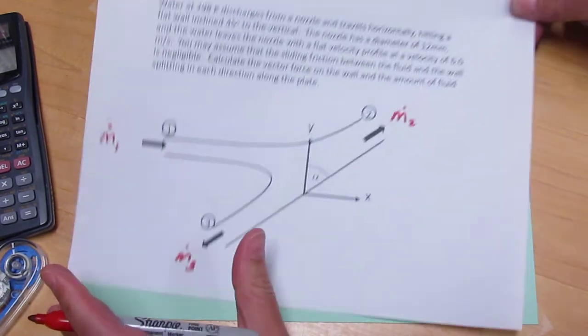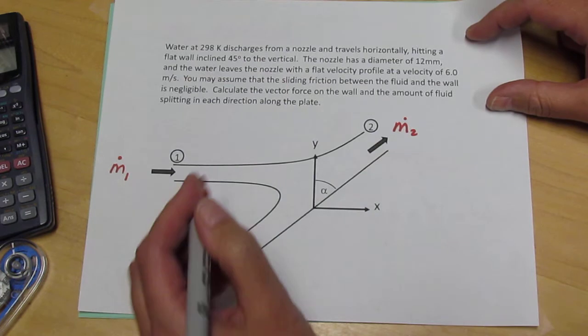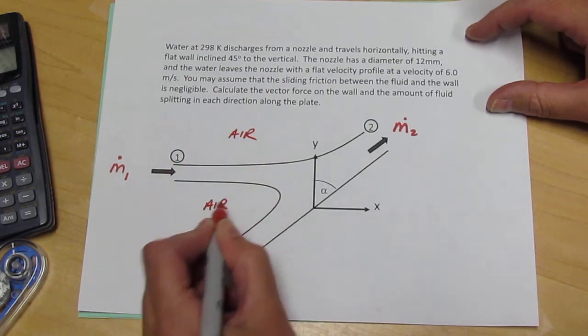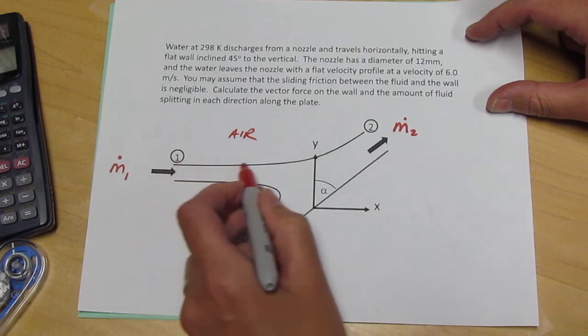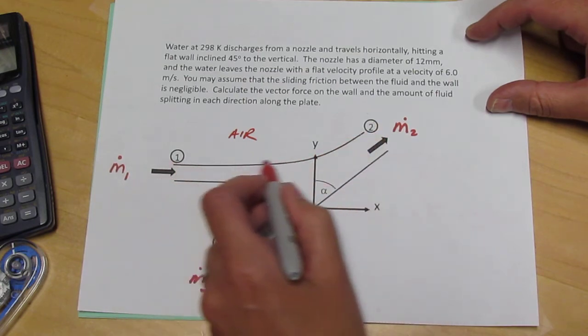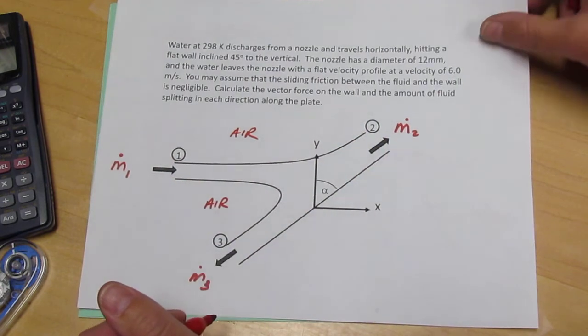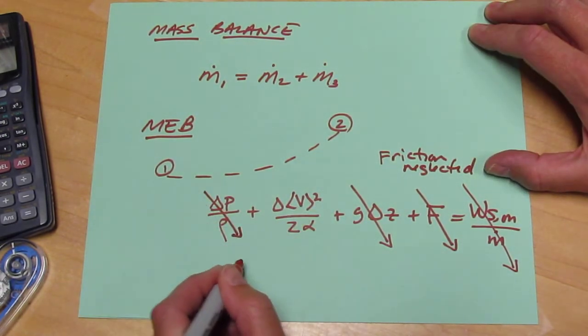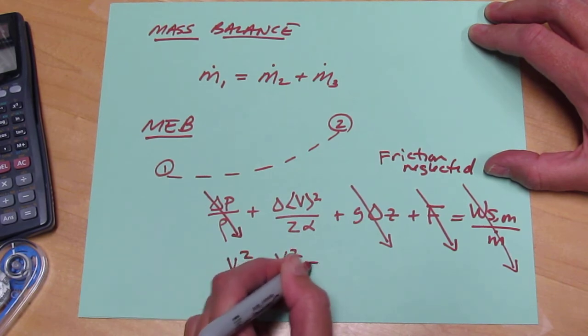Now we actually know something else about the pressure. This is air out here at atmospheric pressure, and so the pressure is the same all along this flow. So if in addition to all these other assumptions the pressure is the same, we find out that V2 minus V1 must be zero or V1 equals V2.